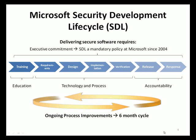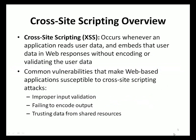This presentation focuses on cross-site scripting vulnerabilities and how the exposure to attacks based on these vulnerabilities can be reduced using the guidance, process, and tools provided by the Microsoft SDL. Cross-site scripting vulnerabilities, or XSS for short, occur whenever an application reads user data and embeds that data in web responses without encoding or validating that data. The user data may have originated from an untrusted source, such as a malicious user or an untrusted database, and may contain malicious code or script.